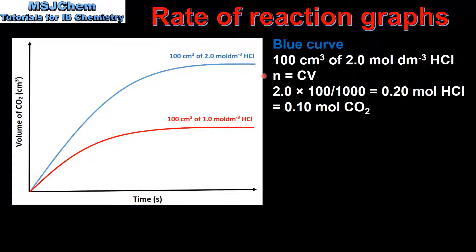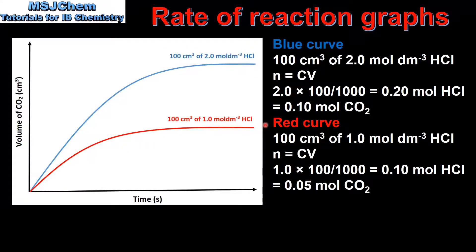For the blue curve, we determine the amount in moles of carbon dioxide produced using N = CV: that's 2.0 × 100/1000 = 0.20 moles of HCl, giving 0.10 moles of CO₂ due to the 2:1 ratio. For the red curve, N = CV gives 0.10 moles of HCl, so 0.05 moles of CO₂. Assuming STP, the blue curve produces twice the volume of gas as the red curve.